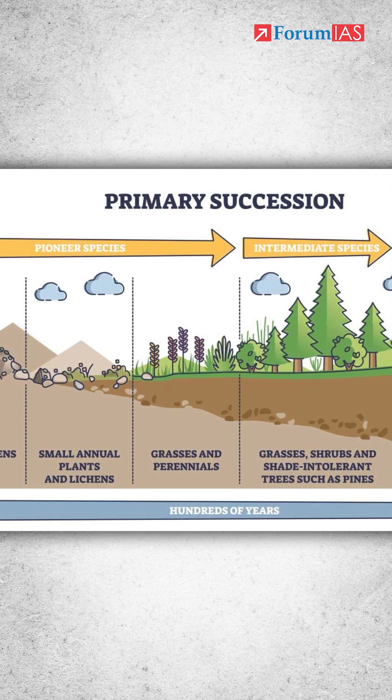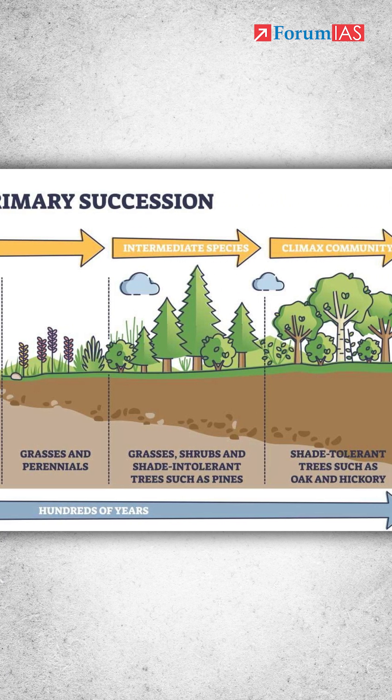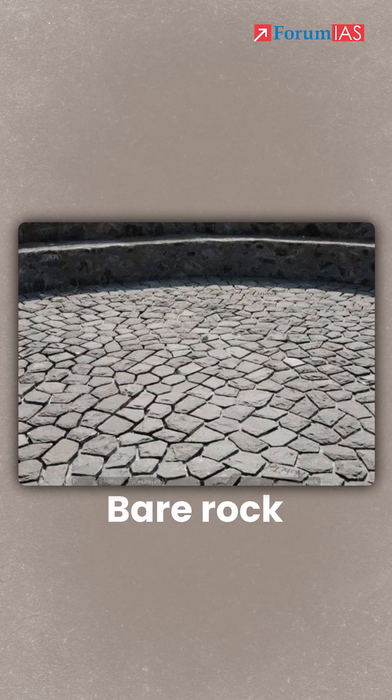So what is this ecological succession? Let's say there was some area and in that area there was no soil. Nothing was there. In that area, let's say this was a bare rock.